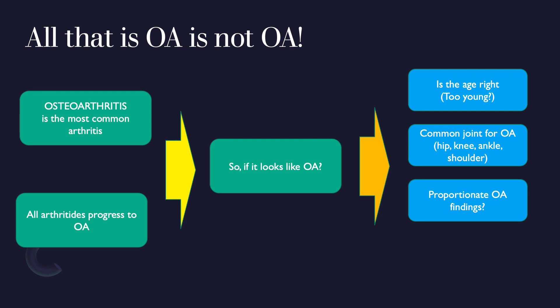If you see a disproportionate pattern — for example, a lot of joint space narrowing but not much sclerosis or osteophyte formation — that disproportion should alert you that something may not be primary osteoarthritis. And last but not least, look for any other clues that could tell you this is not primary OA.